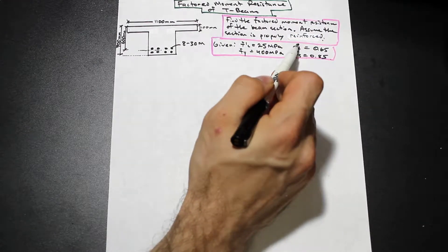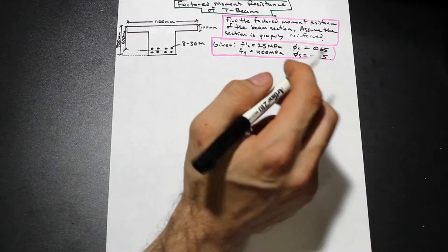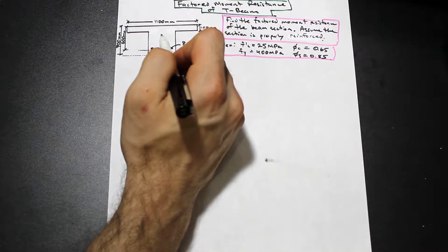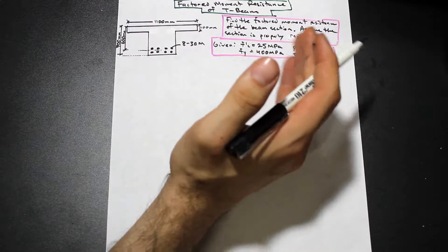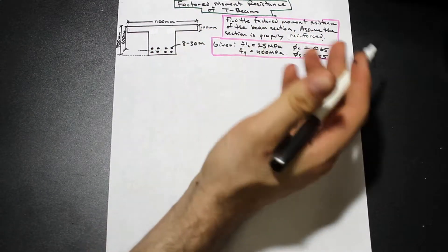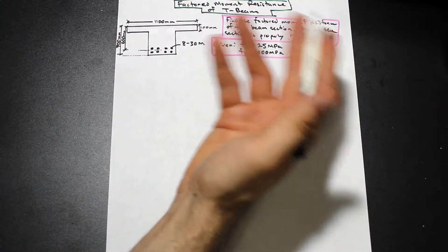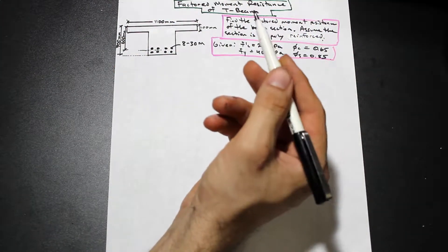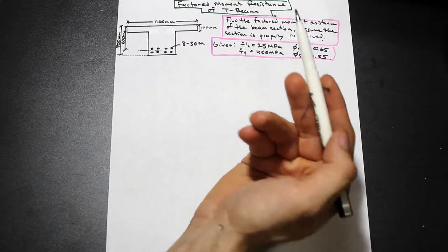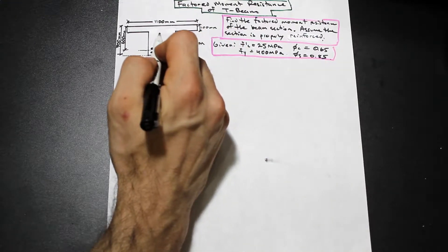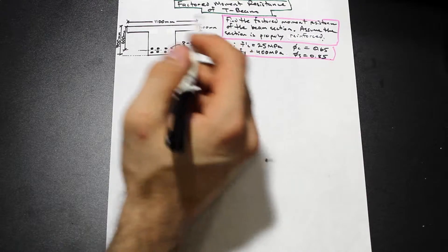We're given f'c, fy, φc, and φs. The first step is to calculate where the neutral axis is. We're going to assume that the neutral axis falls in the web and then confirm that assumption. We start exactly like a normal beam — equate Cr to Tr and solve for a. If a is larger than the flange thickness, we know the neutral axis is within the web.